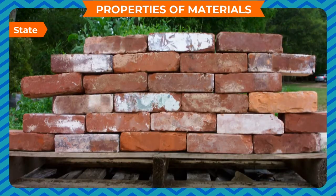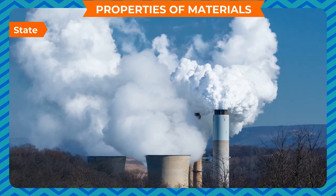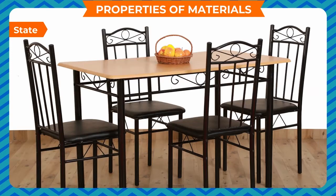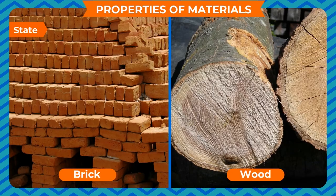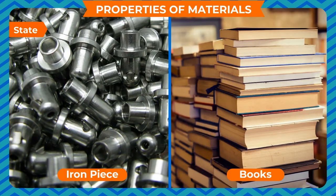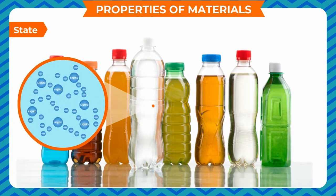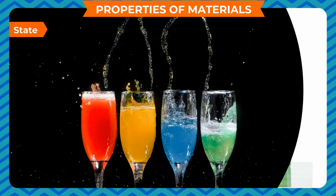State: materials are also classified on the basis of their states — solid, liquid, or gaseous. In solids, molecules are packed very close to each other and the force of attraction between them is very strong, which is why they have fixed volume and shape. Examples of solid materials are brick, wood, iron, books, and tables.